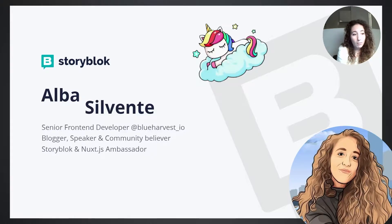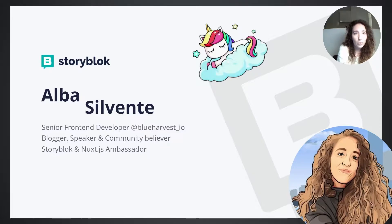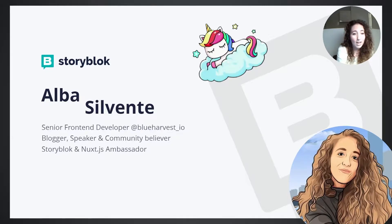In my free time, I write blogs about the technology I use in my projects, and I speak at some conferences and podcasts. I'm contributing to the open source community — I'm a community believer, and I think we need to do it to make it grow. The past year, after writing my blog and start working in projects, I have been named ambassador of Storyblok and Nuxt, the technologies I use for my personal blog and all the projects I'm working on, so I'm happy to be part of the team.